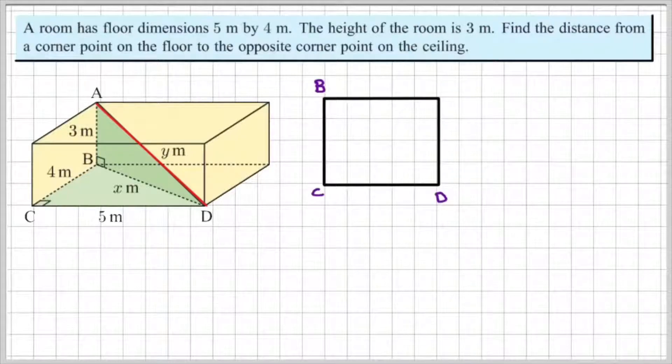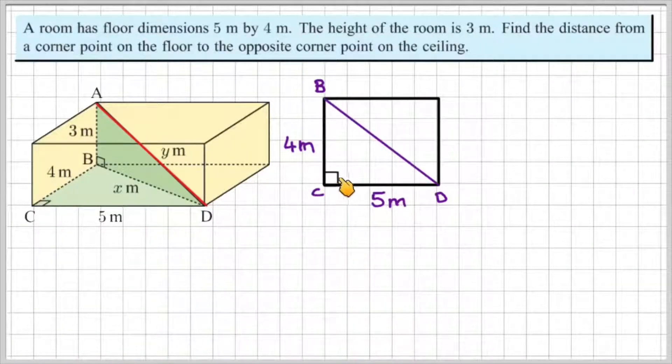So I'm going to redraw the base of this room. I know I have 5m from C to D and I know I have 4m from B to C. So that's the information that's given to me. Now, since I can see from the diagram, we have a right angle in this corner, which means that this corresponding corner here is also going to be a right angle.